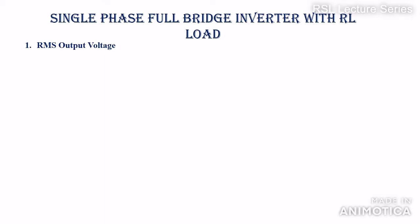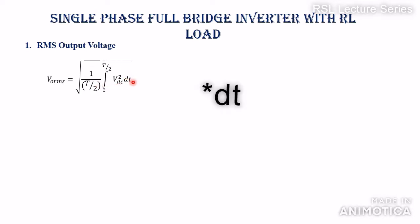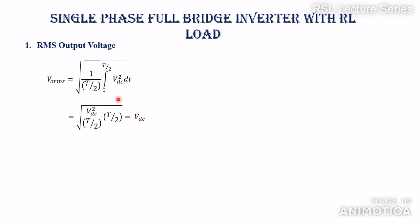Now we will derive the RMS output voltage. V0 is a symmetrical waveform, so we consider only one half cycle. V0_RMS = √(1/(T/2) · ∫₀^(T/2) VDC² dt). Since VDC² is a constant, integrating gives T. Substituting limits from 0 to T/2 gives T/2, so V0_RMS = √(VDC² · (T/2)/(T/2)) = √(VDC²) = VDC. Therefore V0_RMS = VDC.